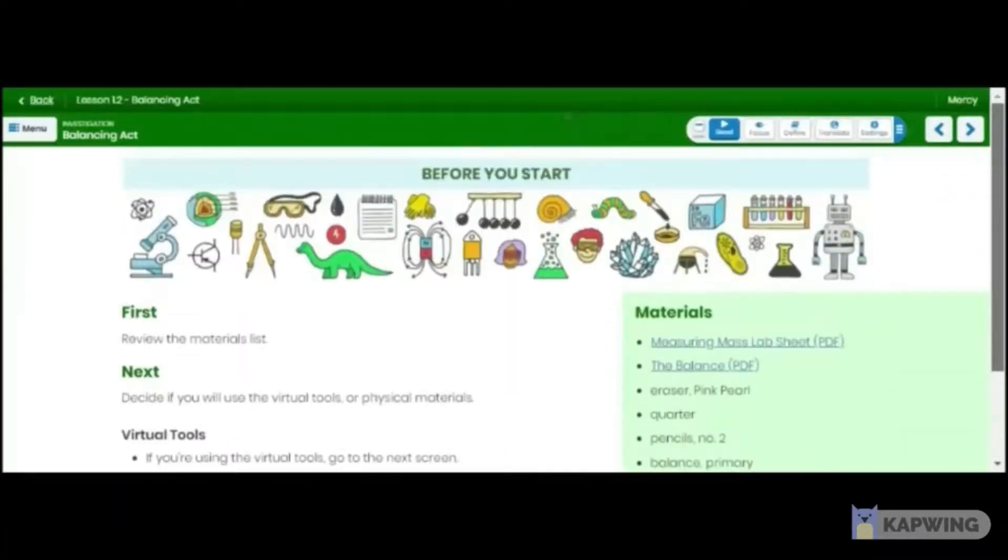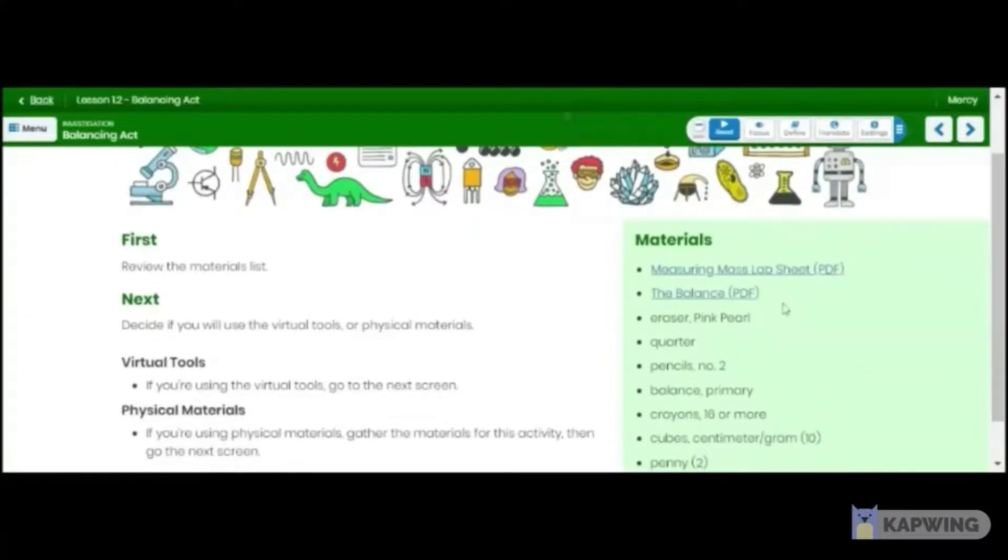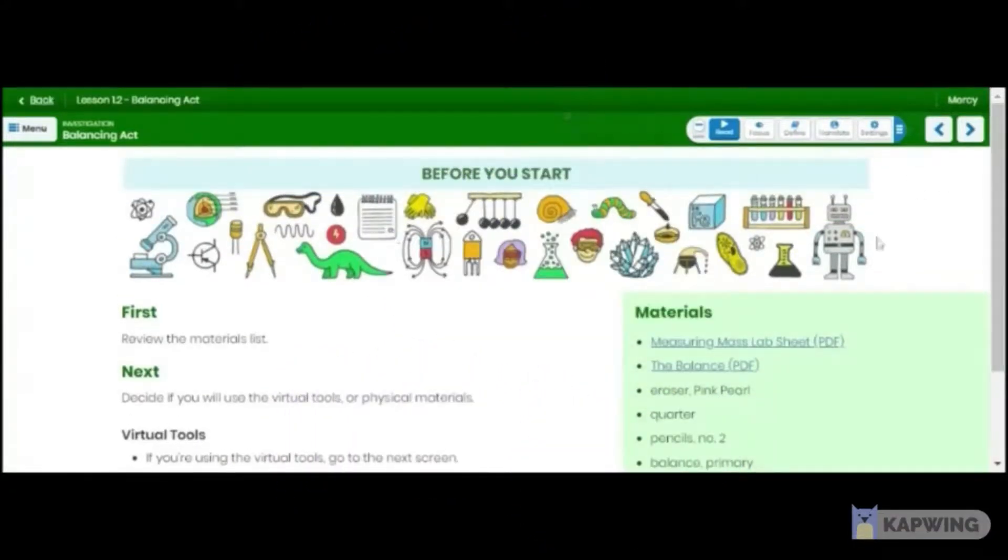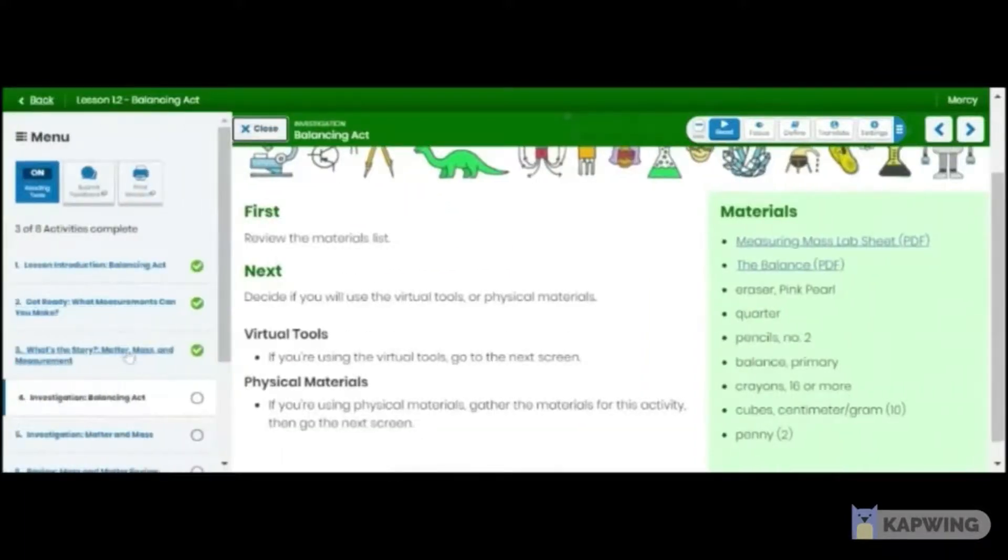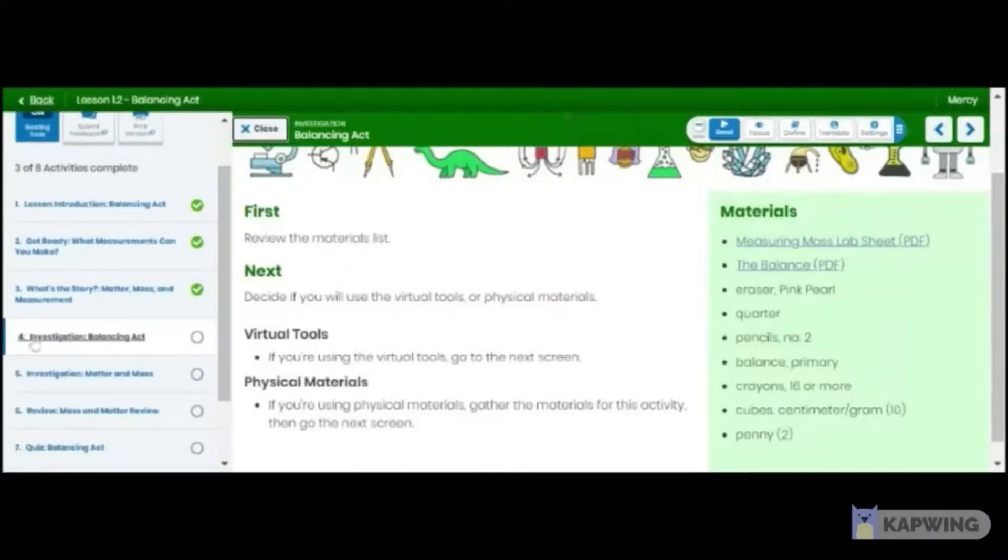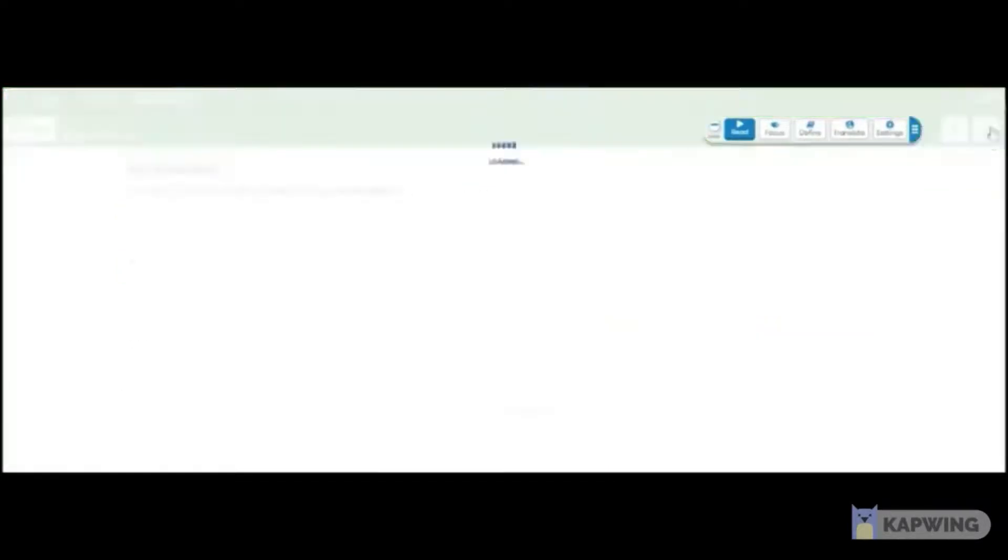Looks like we have an experiment for students. So you guys are going to be doing this activity on your own in the online school. So click on your science course and then you'll find these materials. Once you skip through all of these lessons, it's going to put a check mark next to it. You come to number four, investigation balancing act. That's where you'll find the materials. Learning coaches can find the materials in their learning coach account as well. So first we have to review the materials list. I already have the materials list open up in a different browser and in a different tab. Let's go to the next screen and see what they say.